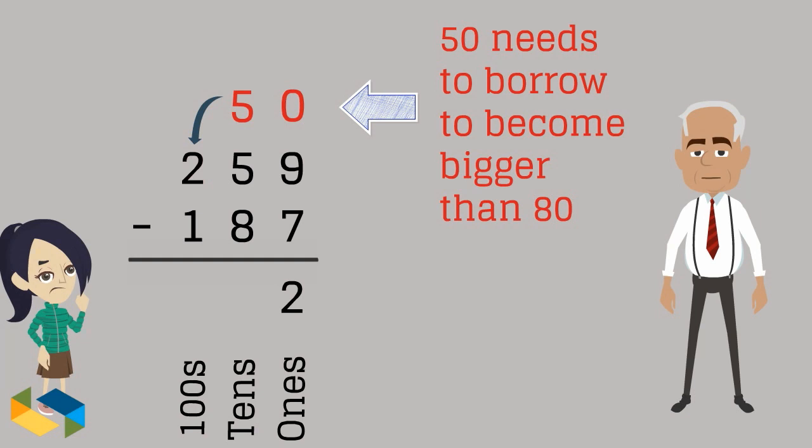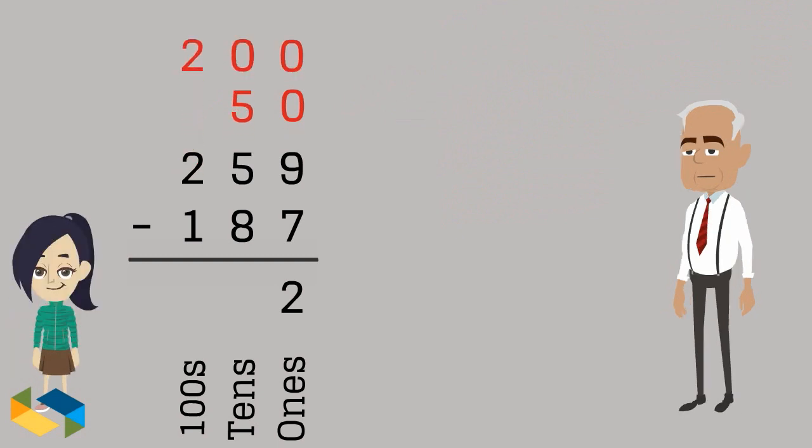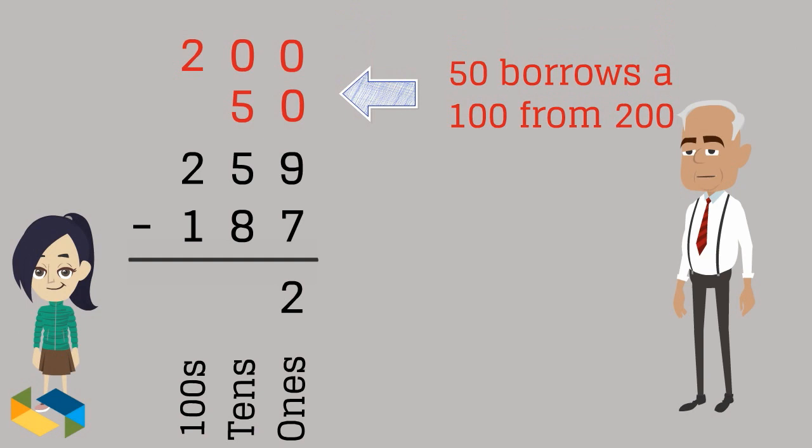It looks up to the next bigger number place, which is the hundreds. So 50 borrows 100 from the number 200.